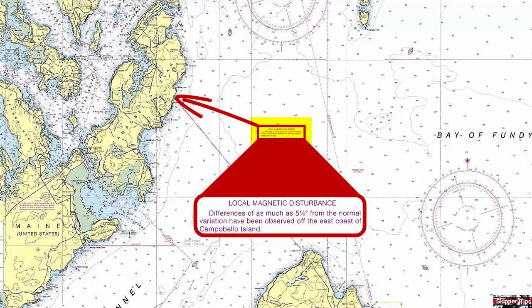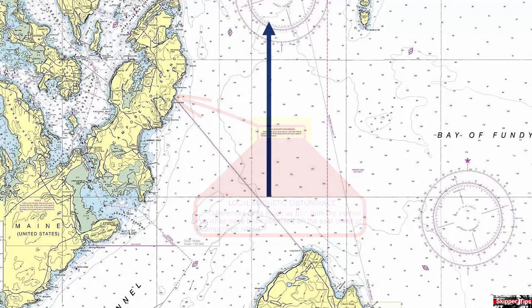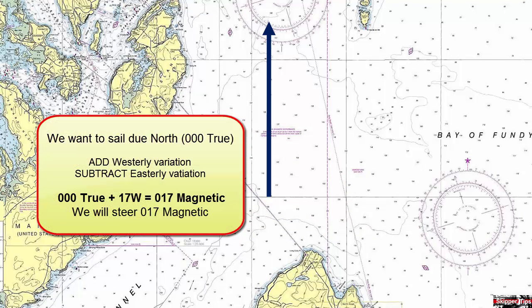Now let's see how this local magnetic disturbance might affect your navigation. We'll plot and label your track line. In this case we're going to sail due north off the east coast of Campobello Island.